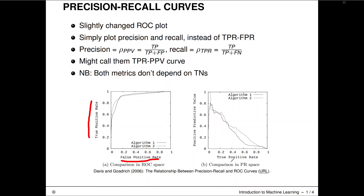For precision-recall curves, we again choose the true positive rate for the x-axis, and then the positive predictive value on the y-axis. Some people like to use alternative names for these: the true positive rate is also called recall, and the PPV is called precision. That is why the plot is called a precision-recall curve. Here I have given you the formulas for PPV and TPR.